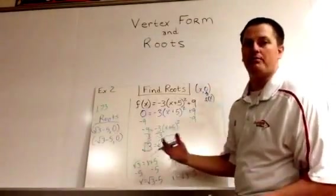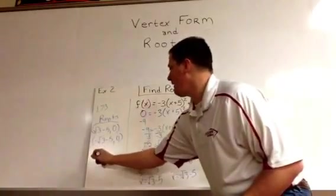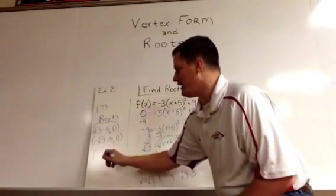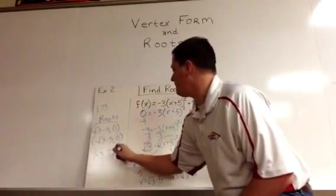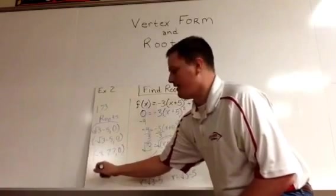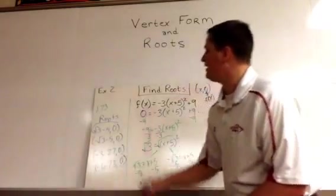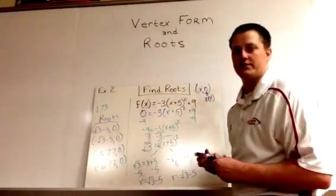If we used 1.73 instead we would get the answers that are rounded, by the way, so they're not exact. These are exact. We would get the answers negative 3.27, comma 0, and negative 6.73, comma 0. So these would be our examples of roots in an irrational situation.